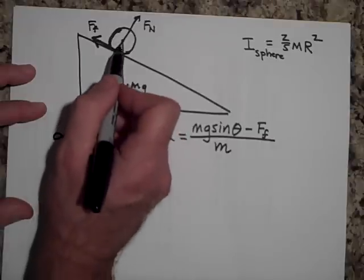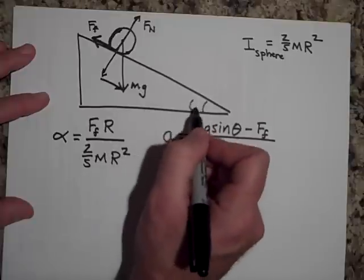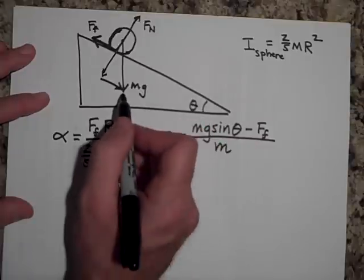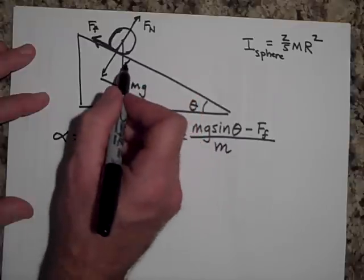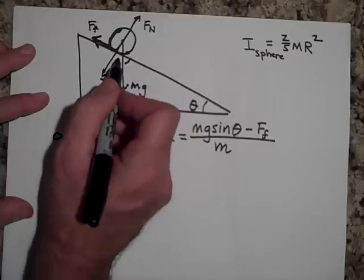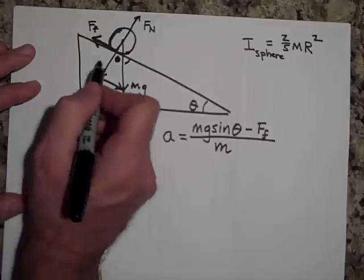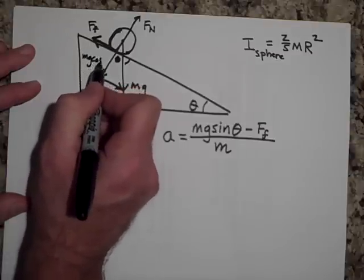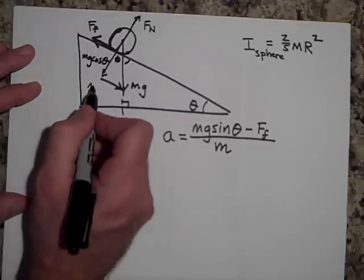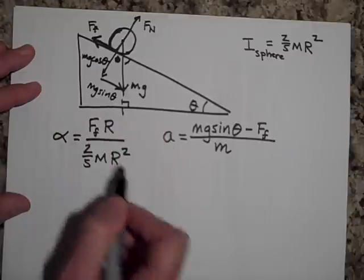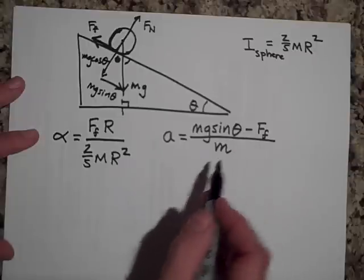If I break the MG into, if this is theta and I bring this down, this is a right angle. So this is 90 minus theta. And so that makes this equal to theta again. So this is MG cosine of theta. Can you read that on there? I don't know. And this is MG sine of theta. So the net force in the X direction is MG sine theta minus the force of friction all over M.